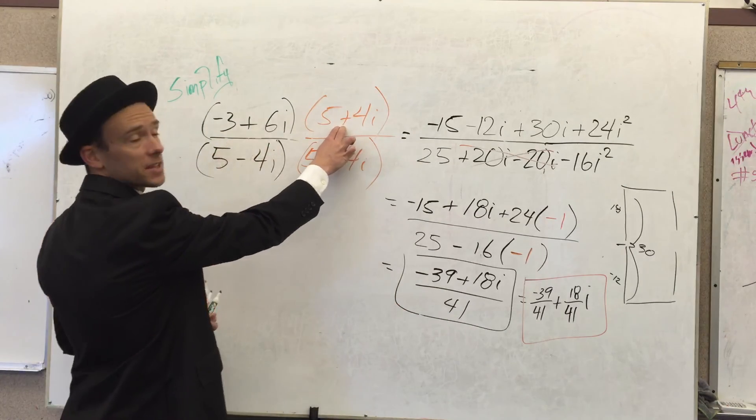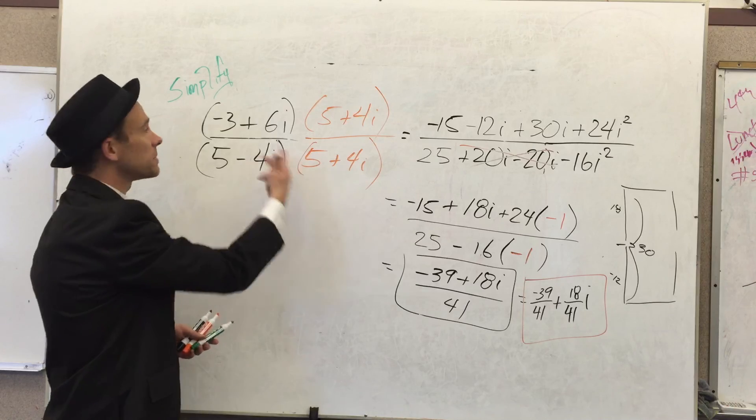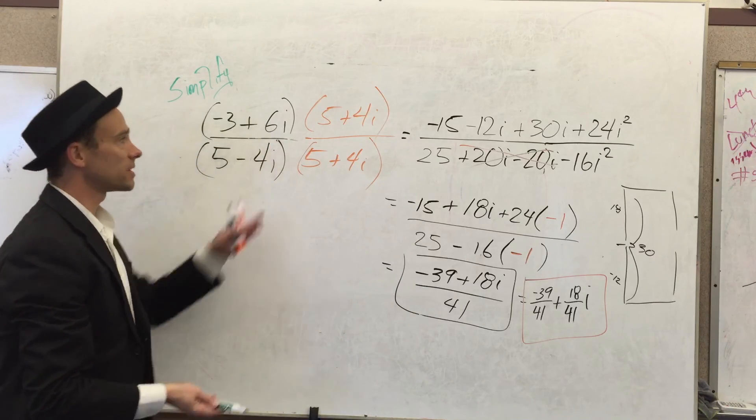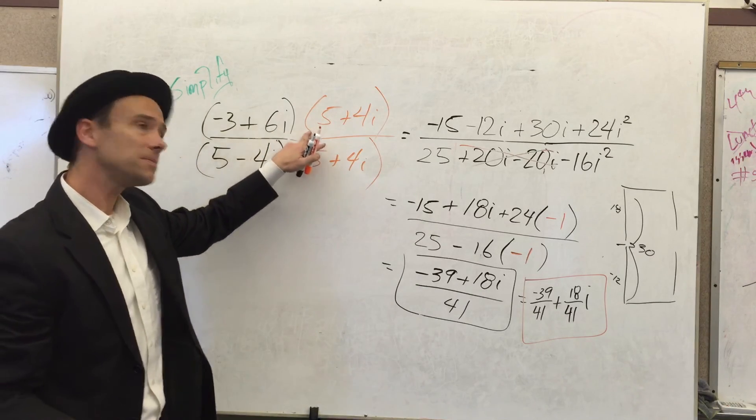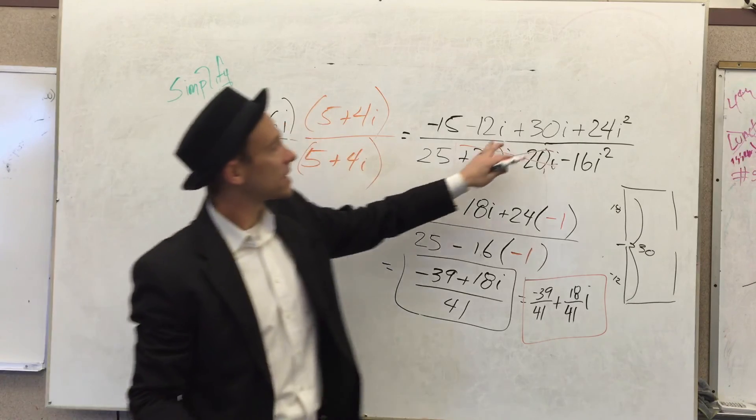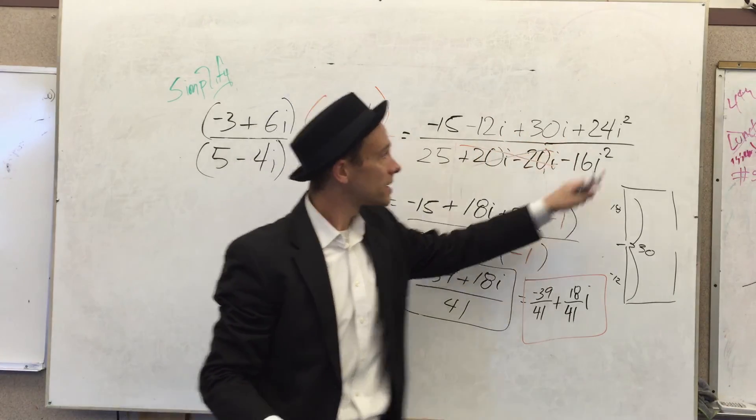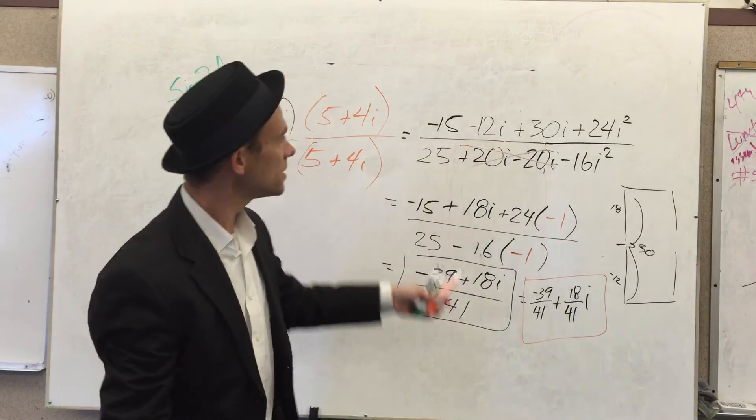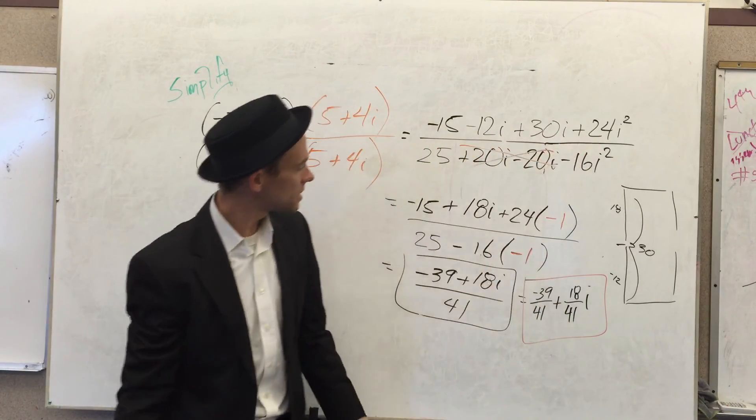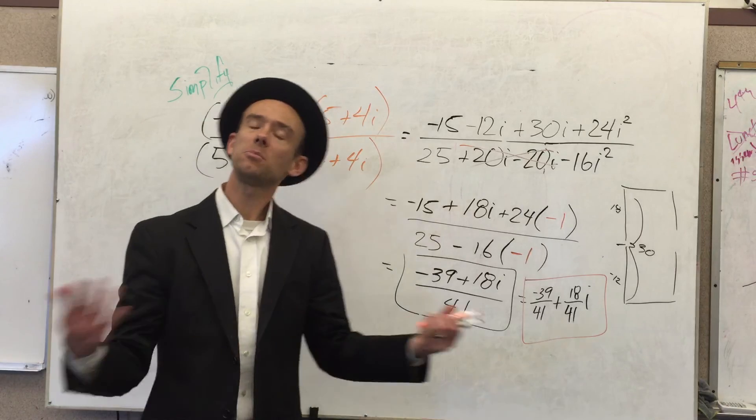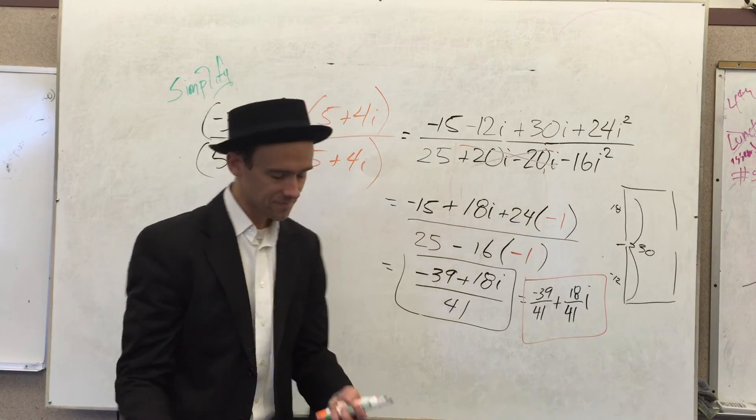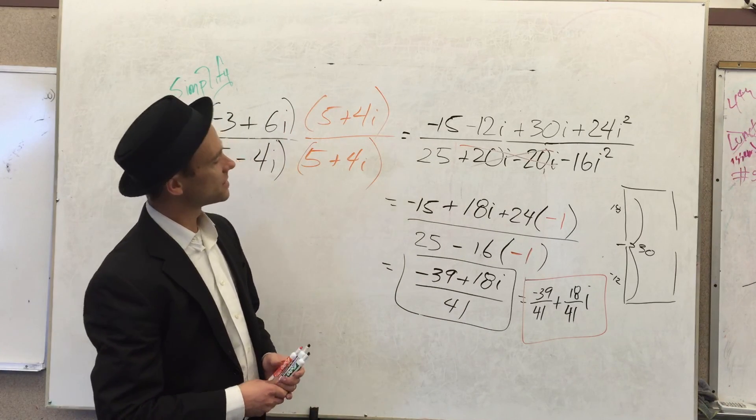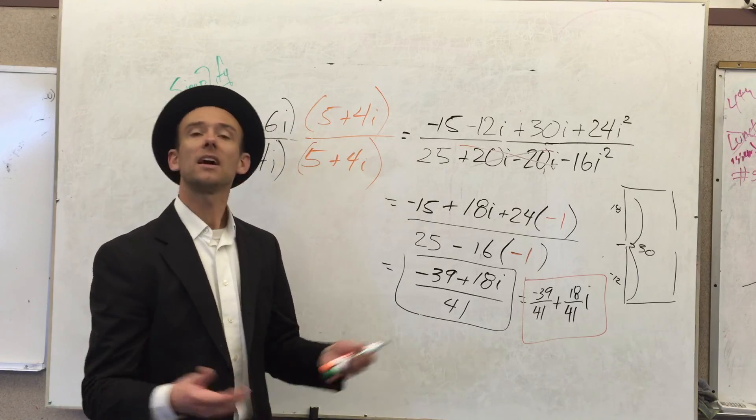Up here I had to multiply the top by whatever I multiplied the bottom, because it's a fraction. If you don't do that, you'll change the value of your fraction. You keep in mind that i's become like terms and that i squared is negative 1. i's are like terms. You follow that, you're going to be in good shape.